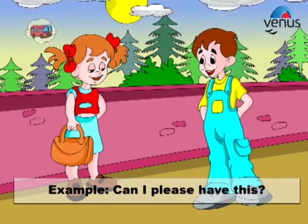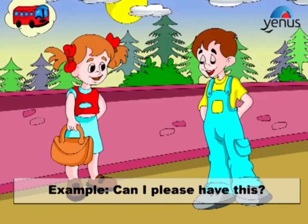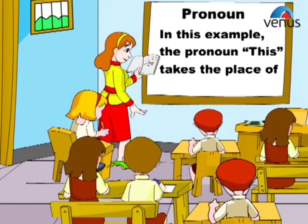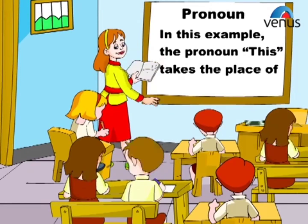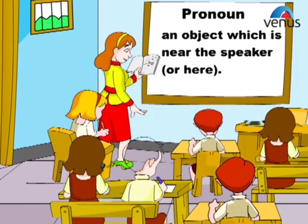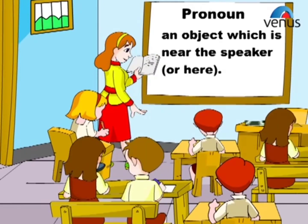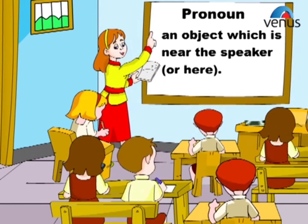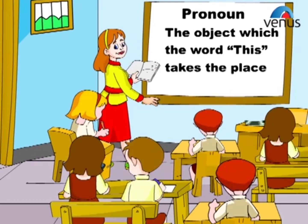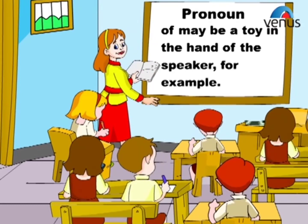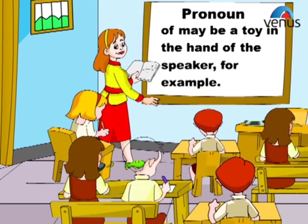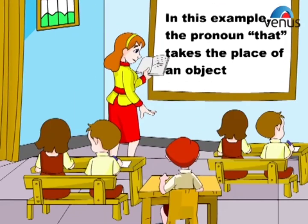Example: Can I please have this? In this example, the pronoun 'this' takes the place of an object which is near the speaker, or here. The object may be a toy in the hand of the speaker, for example.